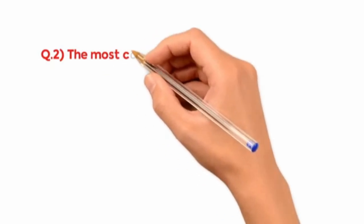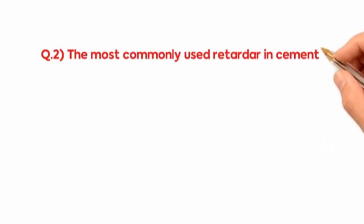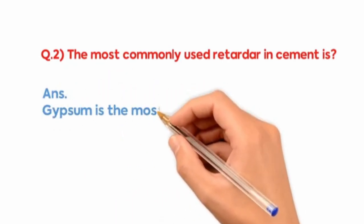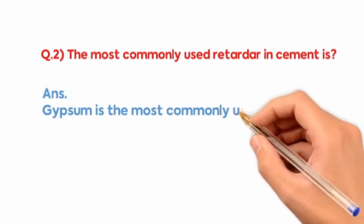The most commonly used retarder in cement is? Gypsum is the most commonly used retarder in cement.